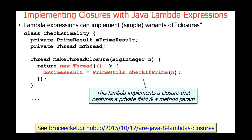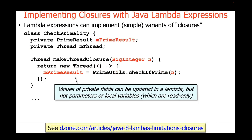We're going to have a lambda expression that provides a Runnable parameter to the Thread class. In this case we're going to use it to implement a closure that captures the private field called mPrimeResult as well as the method parameter, which is the value n — a BigInteger. Notice that with lambda expressions in Java, values of private fields can be updated in the context of a lambda expression. However, you can't update parameters or local variables — those are always read-only, whereas private fields can be updated.